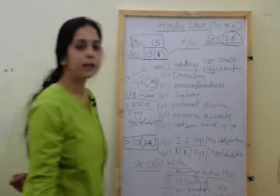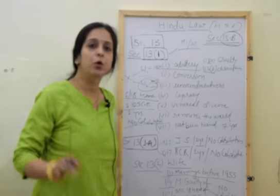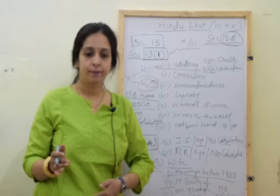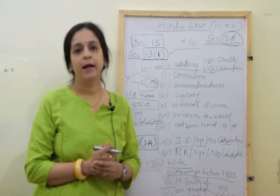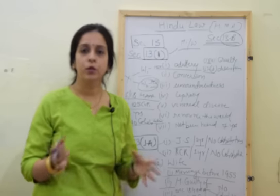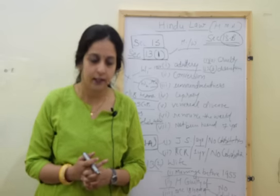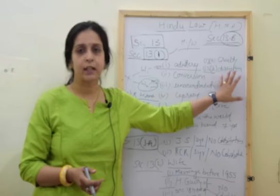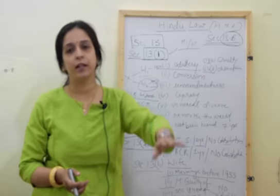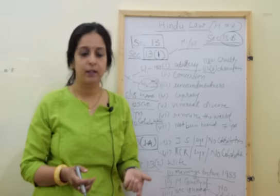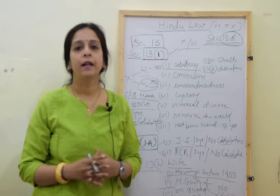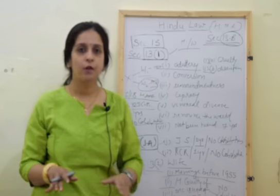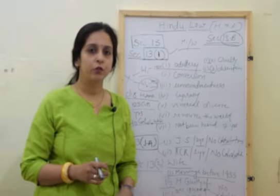Section 13B provides for divorce by mutual consent. When both parties agree, there is no need for any of the specific grounds for divorce. Parties can make a joint petition to the court and mention their conditions. If there is divorce by mutual consent, there is no provision for appeal. Both parties make a joint application to the court stating they are willing to take divorce. The court gives a separation period of minimum 6 months to 18 months, and even after completion of that time period, if there is no cohabitation, the court may issue a decree of divorce. There is no provision for appeal under Section 13B.